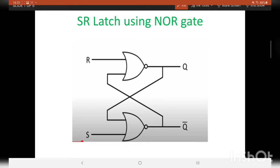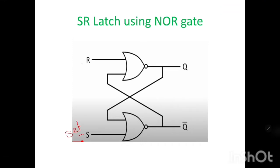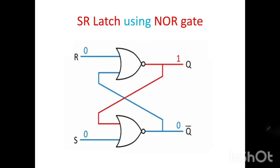SR latch, also called a 1-bit memory device. A latch is a bistable circuit which has two stable states. SR latch has two inputs — set and reset — and two outputs, q and q-bar, which are complements of one another. In this SR latch, the NOR gate is the basic building block.